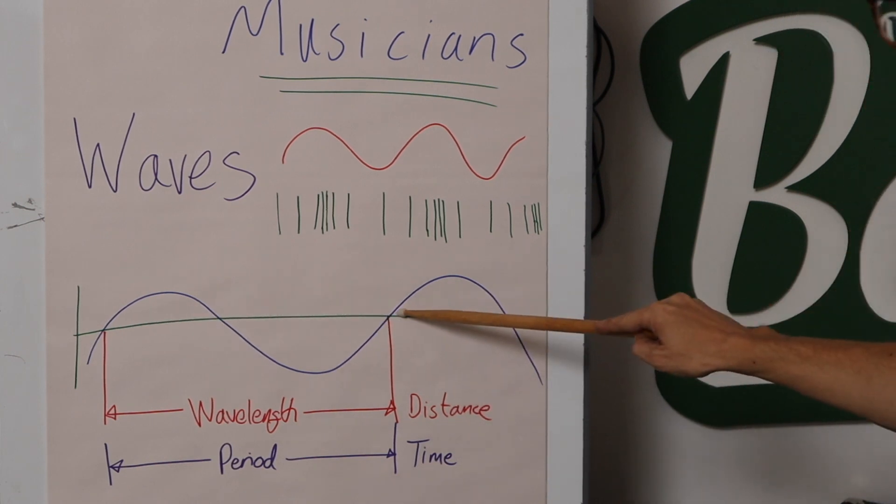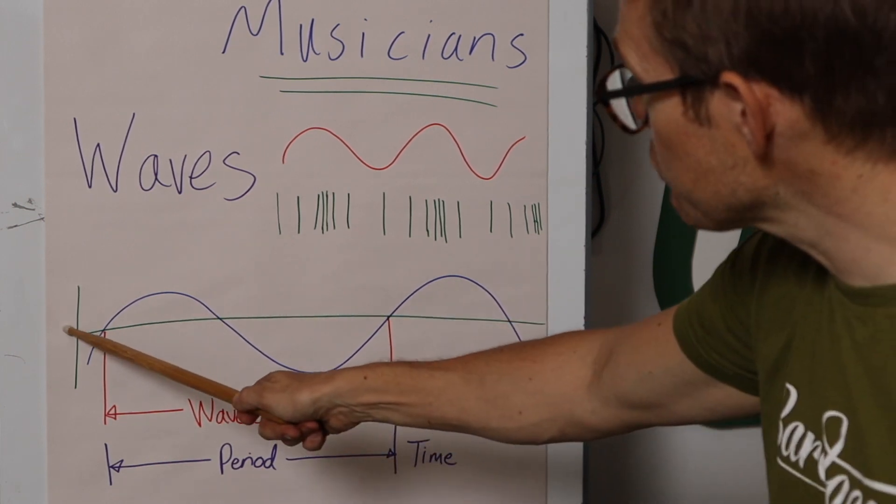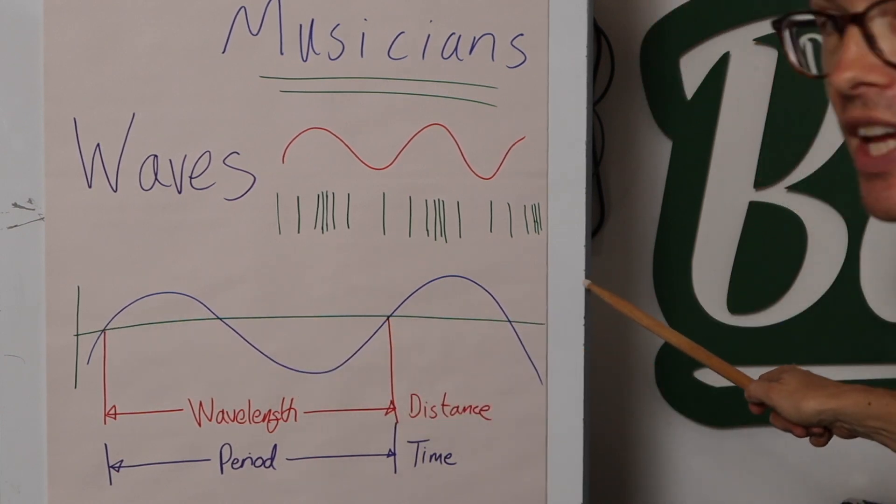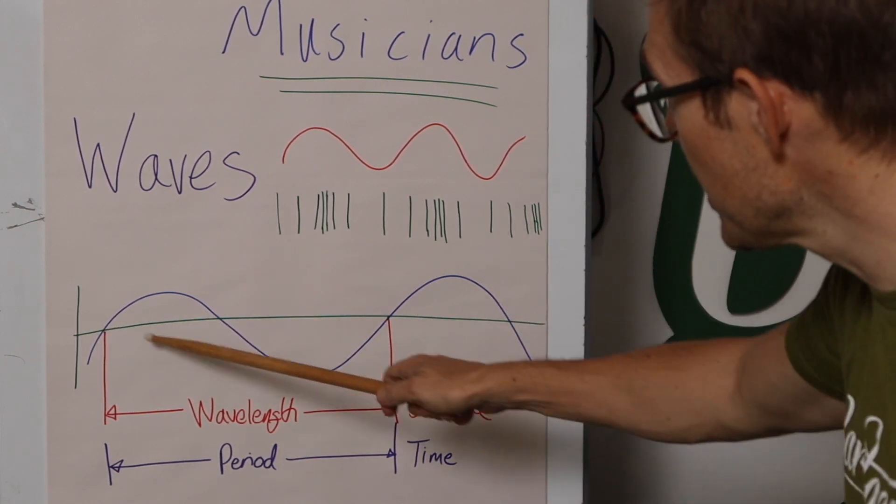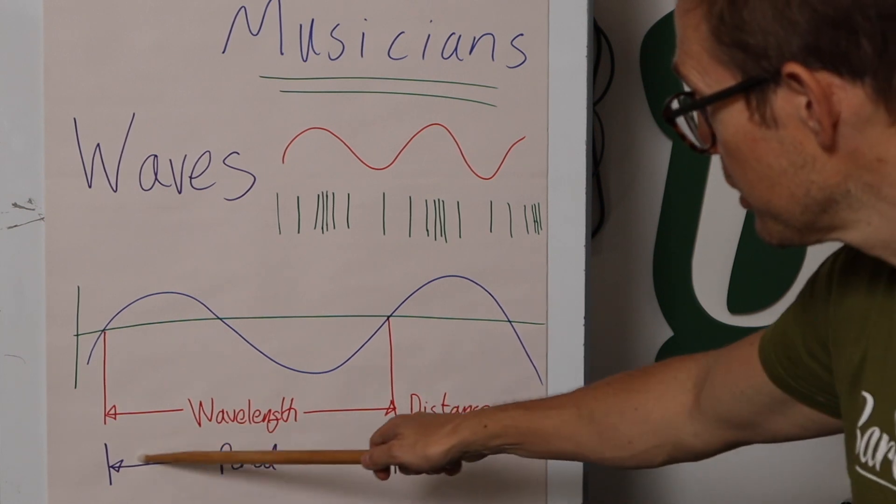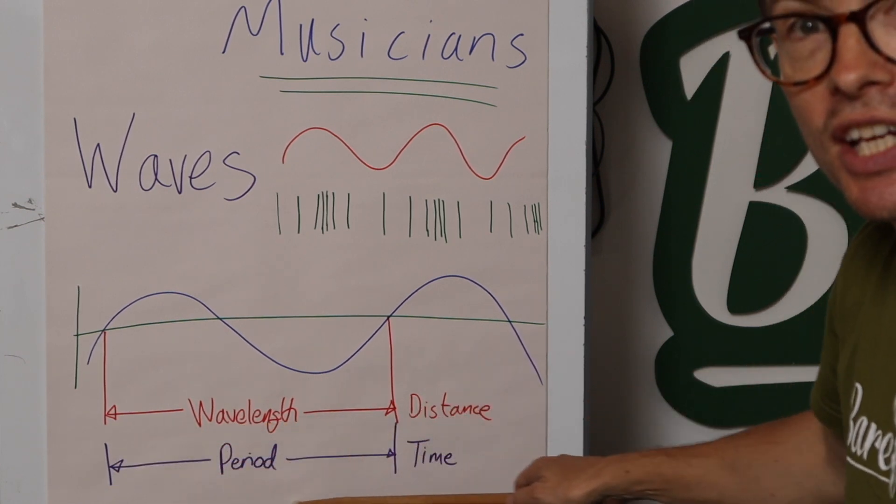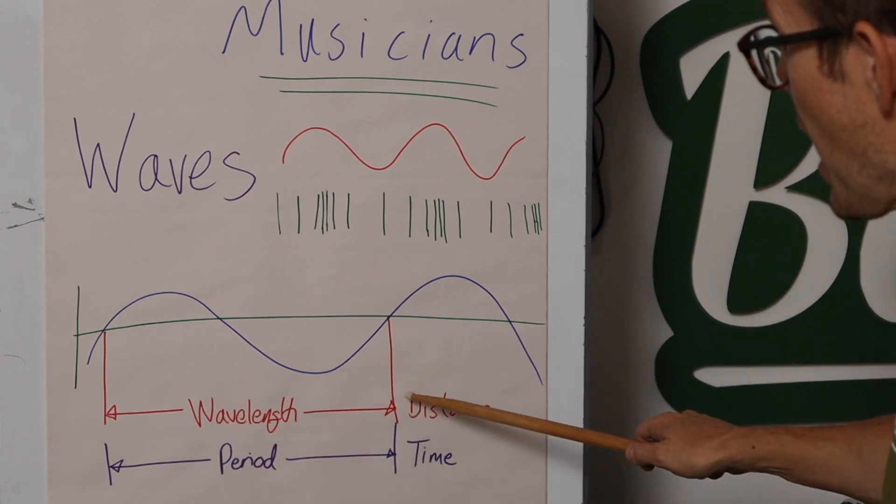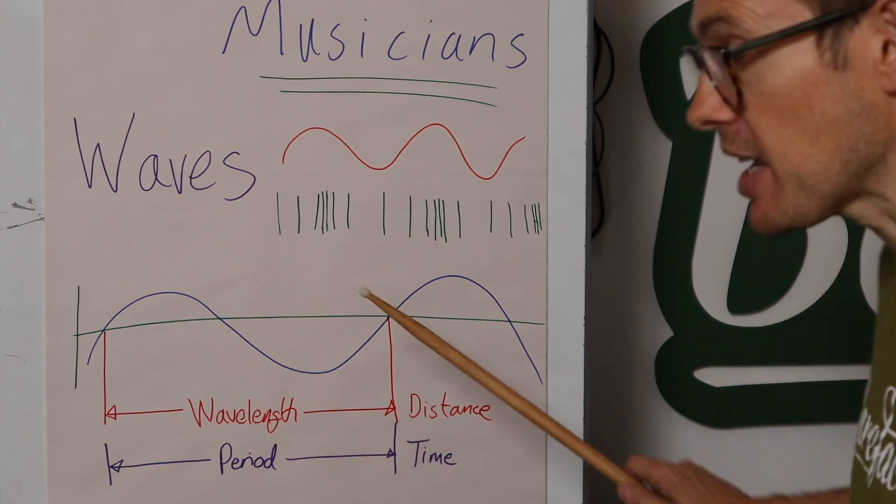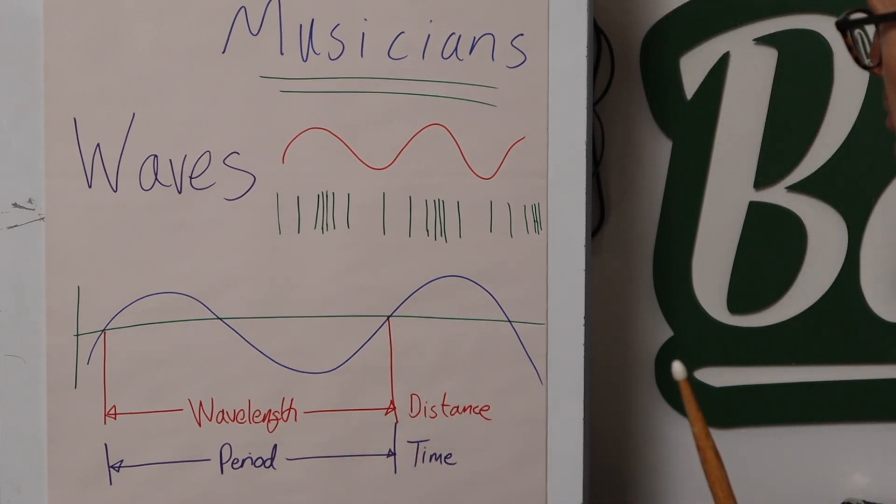So that is one wavelength. And if this y-axis is distance, it is a wavelength. But if this y-axis is time, then it's the period. So the period is how long in time it takes for the wave to happen. And the wavelength is how long in distance it takes it to happen.